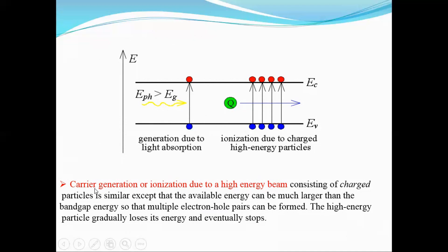The next carrier generation mechanism is ionization due to a high energy beam. This high energy beam consists of charged particles having much higher energy than the band gap energy, so that multiple electron-hole pairs are created. As seen in the diagram, electrons absorb this energy and move from the valence band into the conduction band, resulting in multiple electron-hole pairs instead of a single pair.